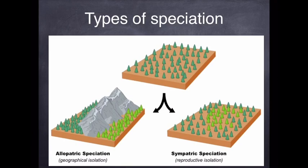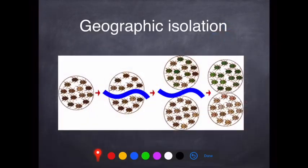Allopatric speciation occurs when individuals are geographically isolated from one another. Sympatric speciation can occur when individuals are reproductively isolated from each other — they can be living in the same area but not able to interbreed for some reason. That is reproductive isolation, and it results in sympatric speciation. Let's have a look at the first type: allopatric speciation, which occurs because of geographic isolation.